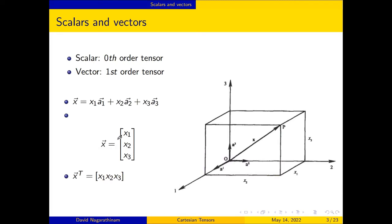A scalar is essentially a quantity that is a zeroth order tensor and a vector can be represented as a first order tensor. In this particular example we are considering a position vector of a point P. The position vector X has coordinate components in the 1, 2, and 3 directions represented by X1, X2, and X3.